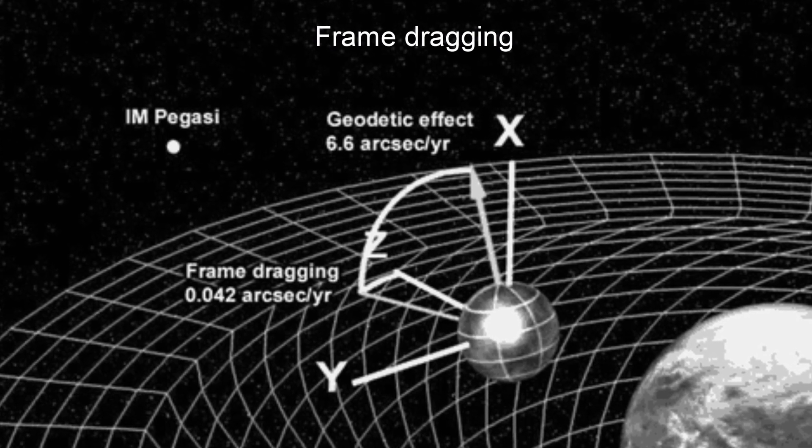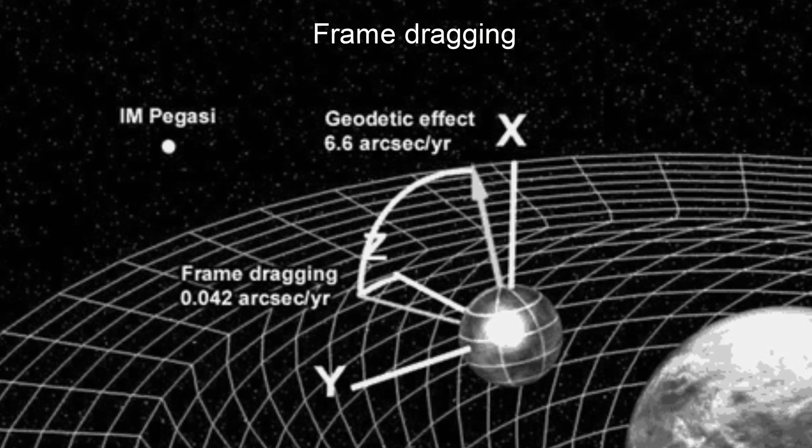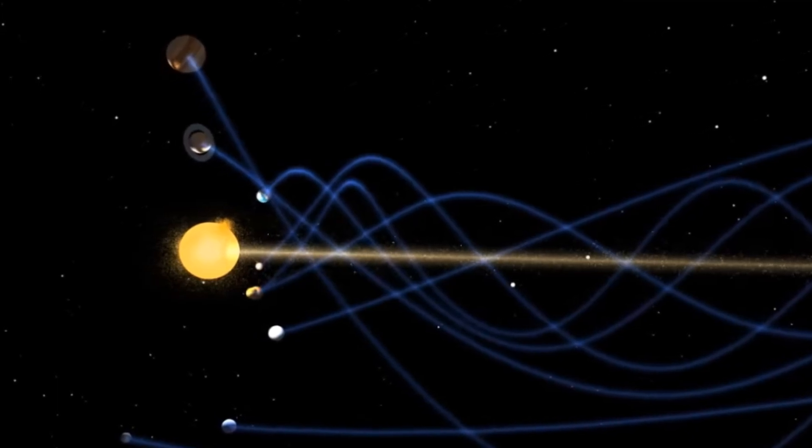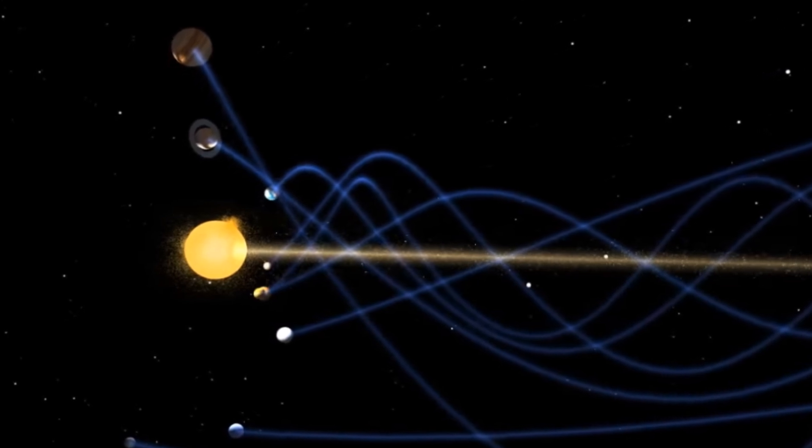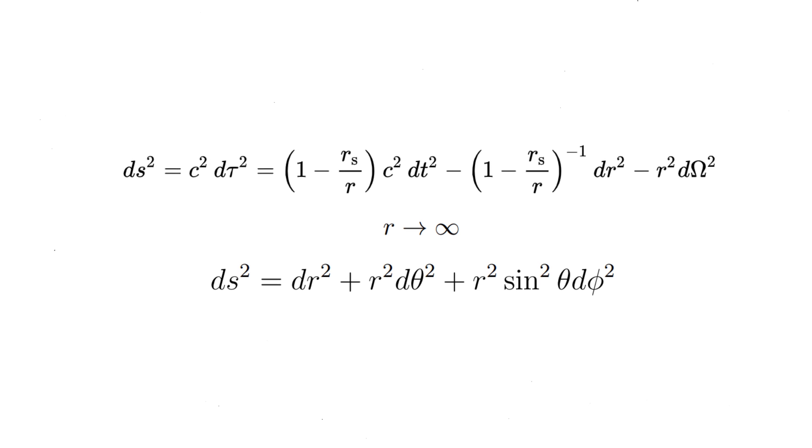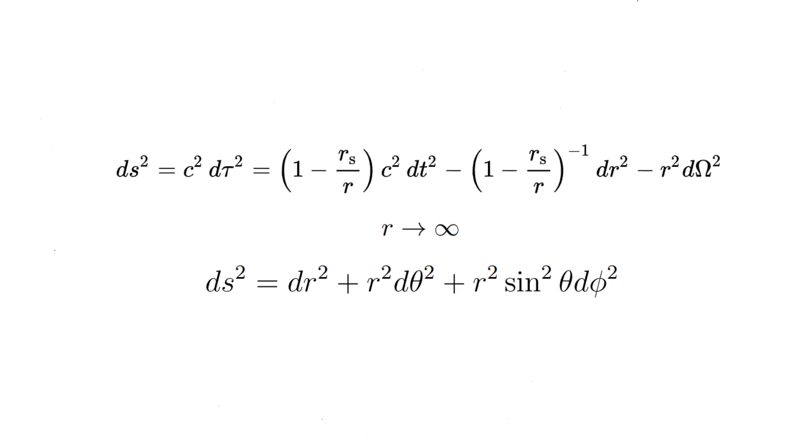General relativity, although featuring some Machian effects such as frame dragging, is not fully Machian, since the solutions of local dynamics do not depend on the mass-energy distribution far away. For instance, in the Schwarzschild solution, space is asymptotically flat at infinity.